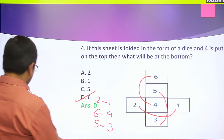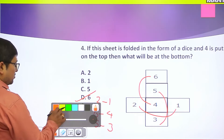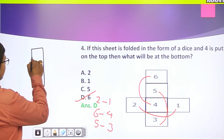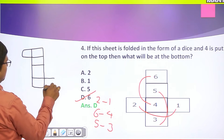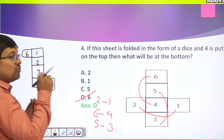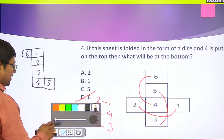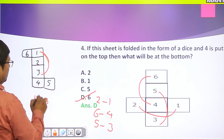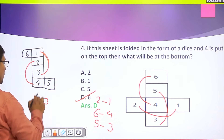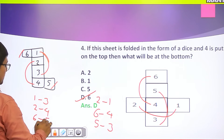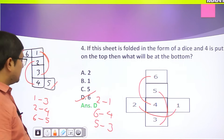A dice net has faces 1, 2, 3, 4, 5, 6. When you fold it, applying the alternating property: 1 and 3 are opposite (skip one), 2 and 4 are opposite (skip one), and 6 opposite 5. This is the same property applied consistently to any open form of dice.